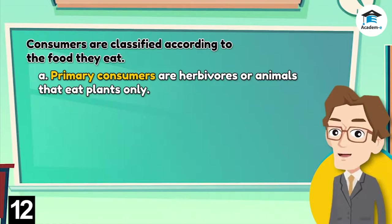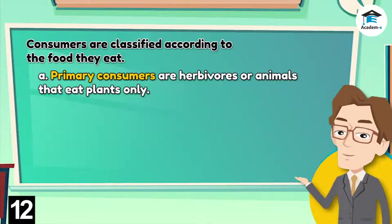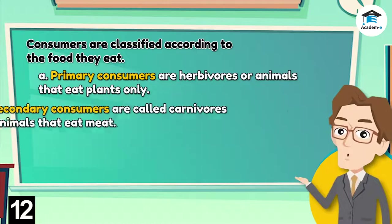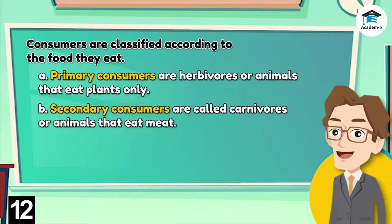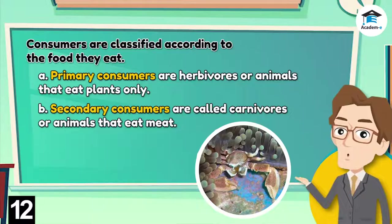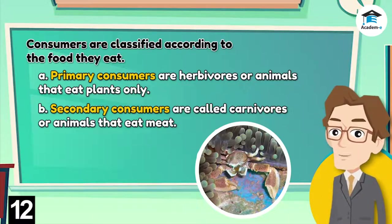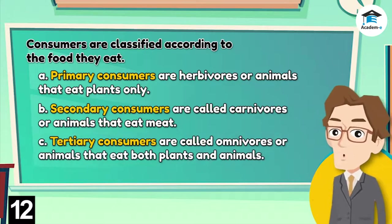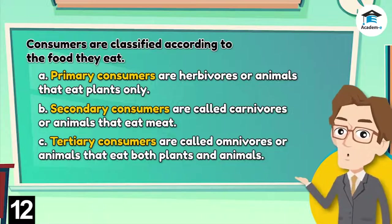Primary consumers are herbivores, or animals that eat plants only — for example, mussels or shore crabs eating plant plankton. Secondary consumers are carnivores, or animals that eat meat — for example, sea anemones eating shore crabs, or purple sea stars eating mussels. Tertiary consumers are omnivores, or animals that eat both plants and animals.